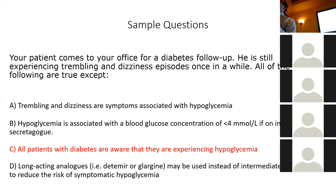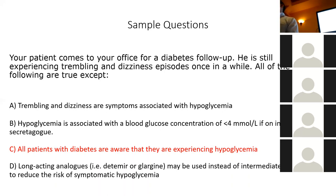Sometimes your body gets used to high sugars, and when your sugars drop even to a normal level, the body senses that drop and panics — sending out the counter-regulatory response when there's no real danger. This is pseudo-hypoglycemia. It's like an oversensitive fire alarm — a little bit of toast trips the wire and all the water comes down. How you treat it is to very slowly bring the sugars down so your body gets used to lower sugars, and then it will eventually go away by itself.